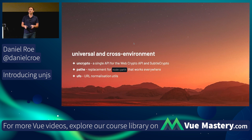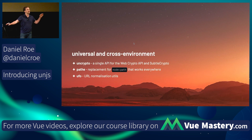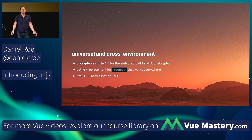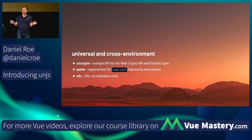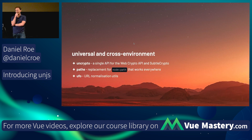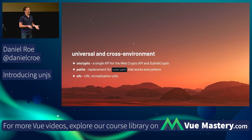We also built uncrypto, which enables universal access to Subtle Crypto and the Web Crypto API in both workers and Node. If you've ever experienced platform incompatibility issues — I once tried to port a JWT implementation from Node to Cloudflare Workers and it was not simple — uncrypto solves those kinds of problems.